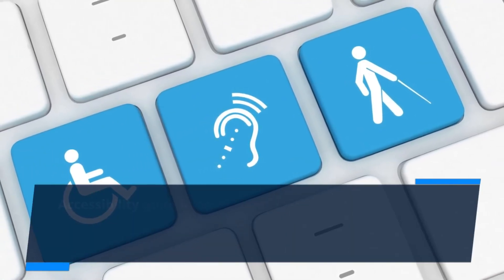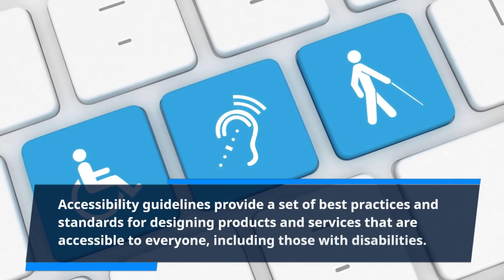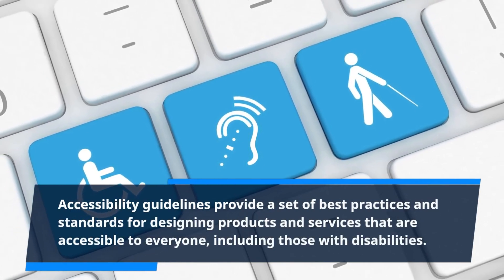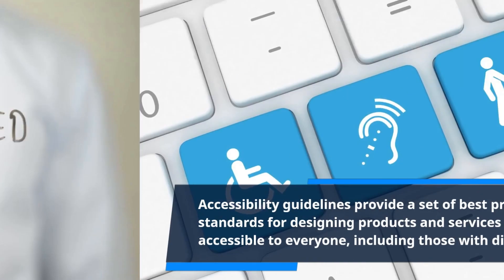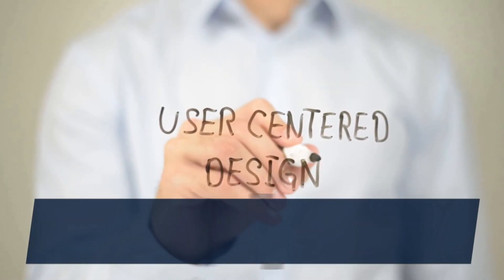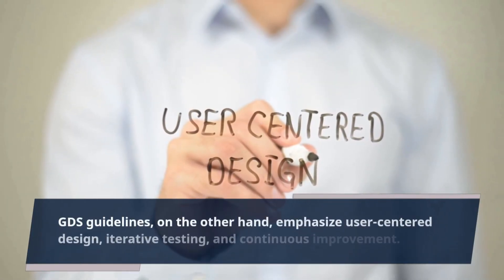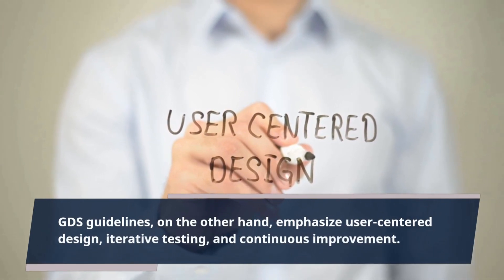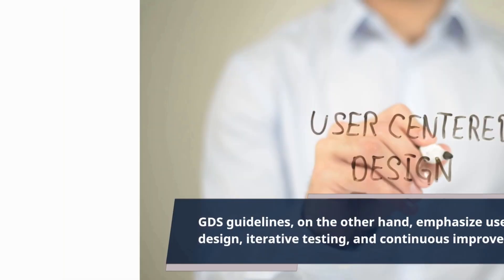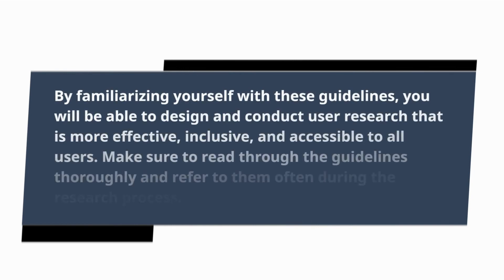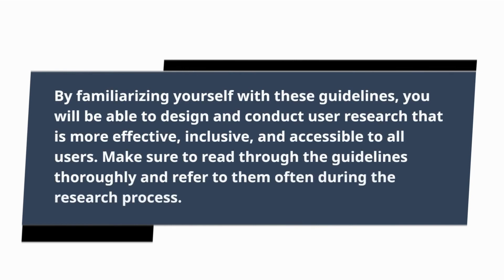Accessibility guidelines provide a set of best practices and standards for designing products and services that are accessible to everyone, including those with disabilities. GDS guidelines, on the other hand, emphasize user-centered design, iterative testing, and continuous improvement. By familiarizing yourself with these guidelines, you will be able to design and conduct user research that is more effective, inclusive, and accessible to all users. Make sure to read through the guidelines thoroughly and refer to them often during the research process.